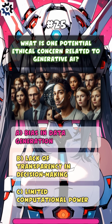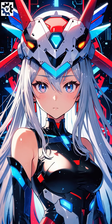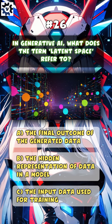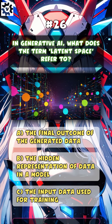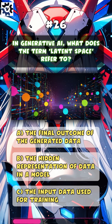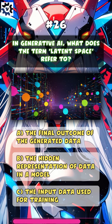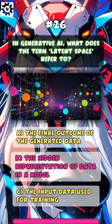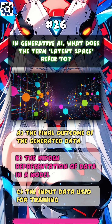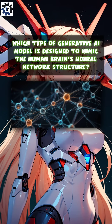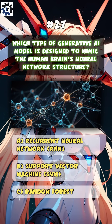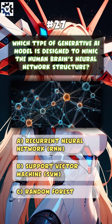What is one potential ethical concern related to generative AI? A, bias in data generation. In generative AI, what does the term latent space refer to? B, the hidden representation of data in a model. Which type of generative AI model is designed to mimic the human brain's neural network structure?